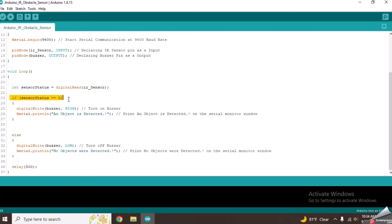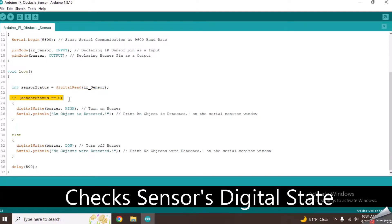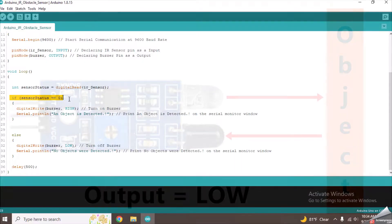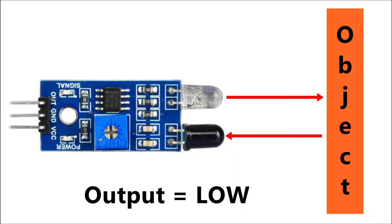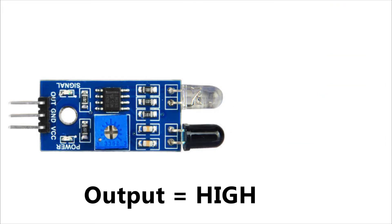From this if condition, it checks the sensor's digital state. When an object is detected, when there is no object, it will output a high signal.